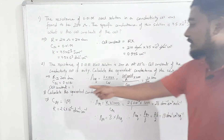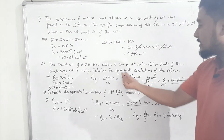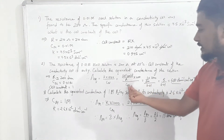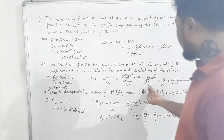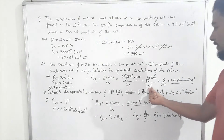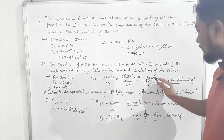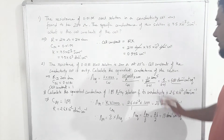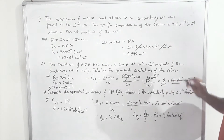Cell constant = 1, resistance = 200 Ω, concentration in normality CN = 0.01. Substituting: λeq = (1/200) × 1000 / 0.01 = 5 / 0.01 = 500.